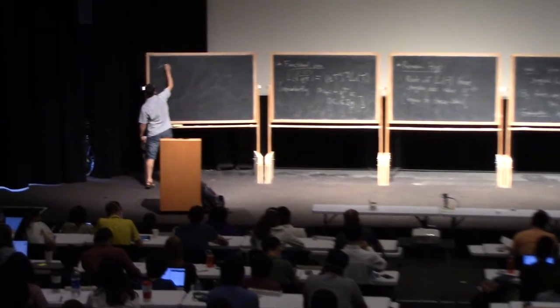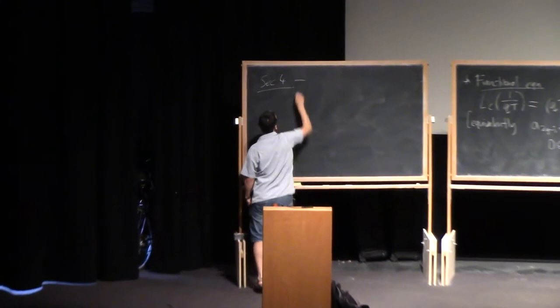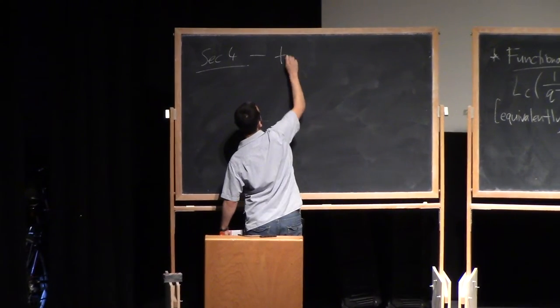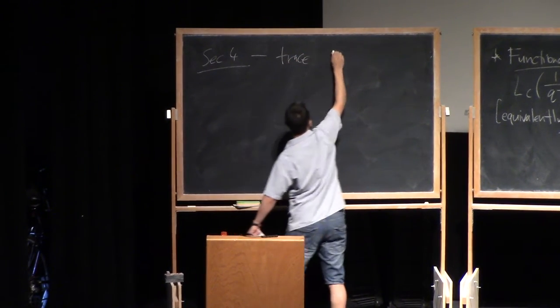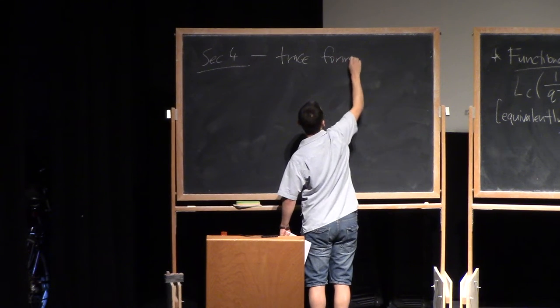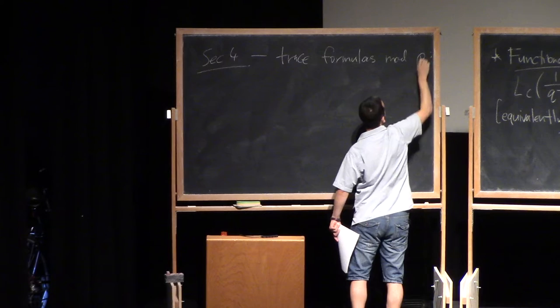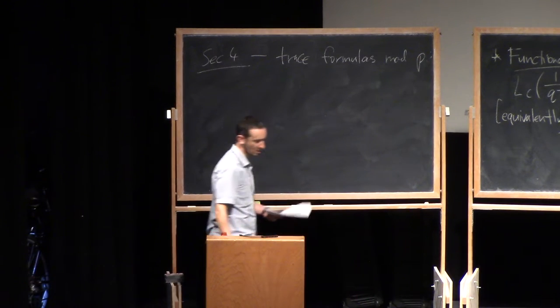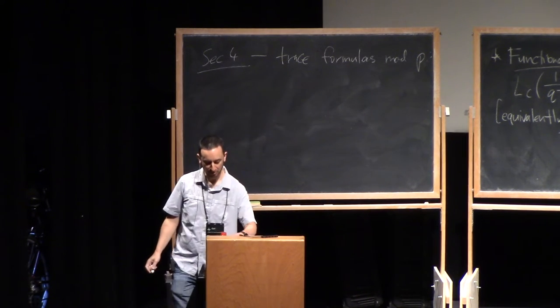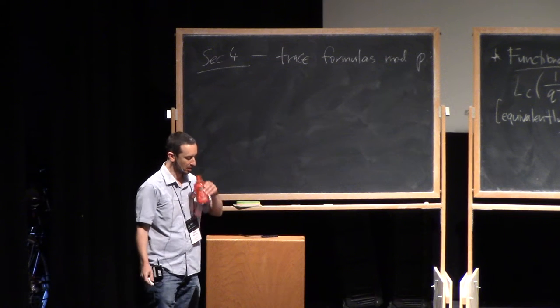Okay, so section four. This is trace formulas modulo P. Now we're actually going to get onto some formulas which are going to be useful for point counting.